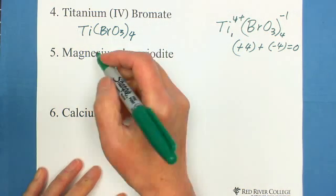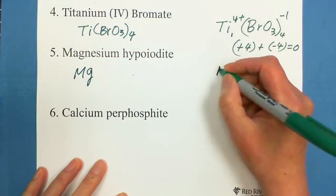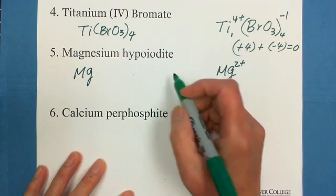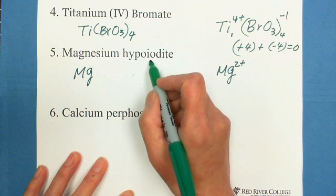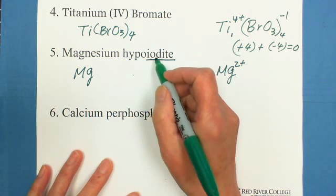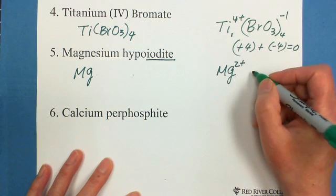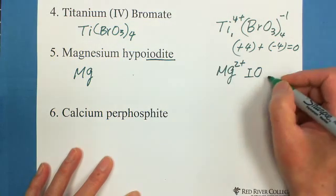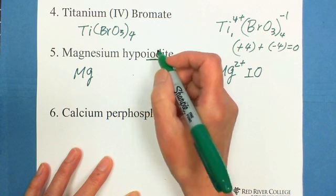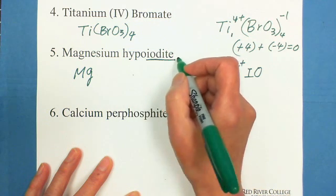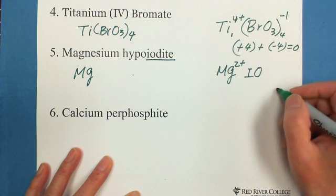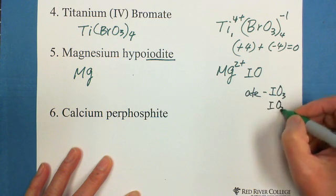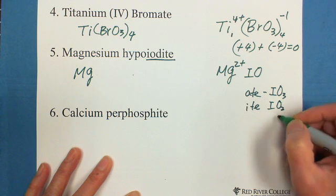Next is magnesium hypoiodate. It's Mg. Magnesium is 2 positive charge, which is in the second group. This is hypoiodate. So first we write iodate. Iodate is IO3. But hypo means 1 less than iodate. That's why it's only IO. Because IO3 is the ATE, IO2 is ITE, then IO with ITE, and we put the hypo prefix.